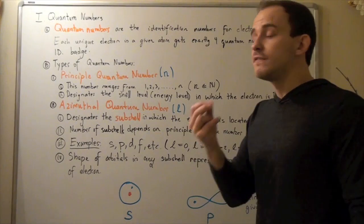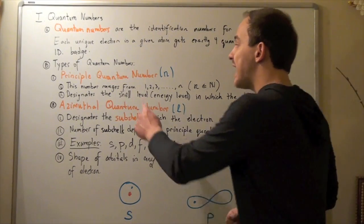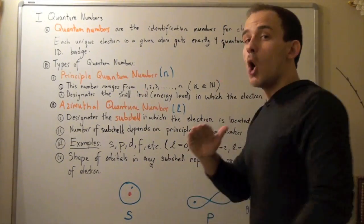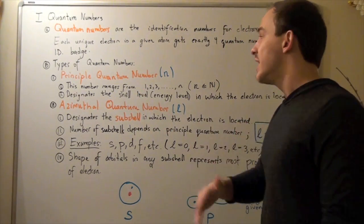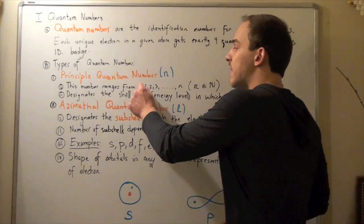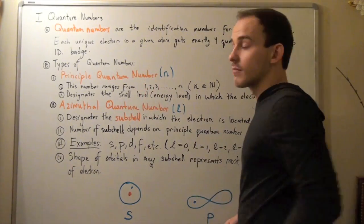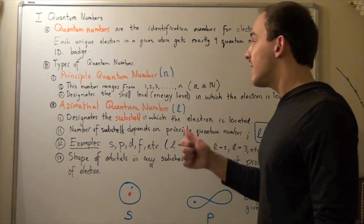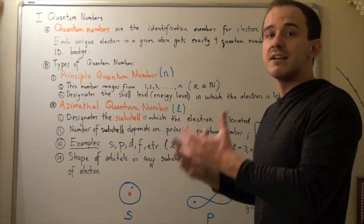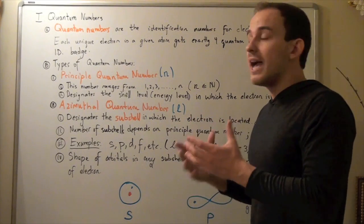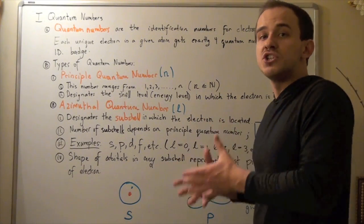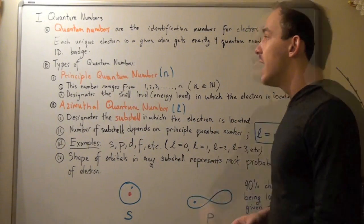An electron found in N equals 1 is lower in energy than an electron found in N equals 2. So, the higher the N, the greater the size of the atom and the greater the energy level in which our electron is located.